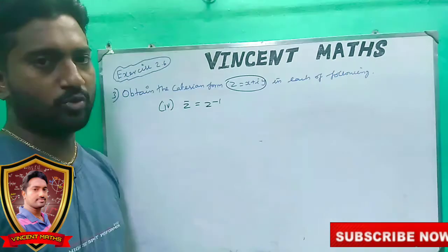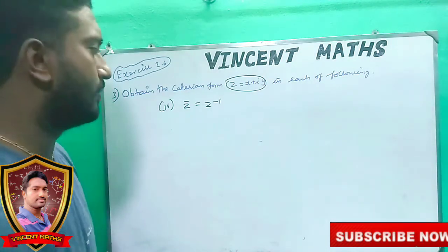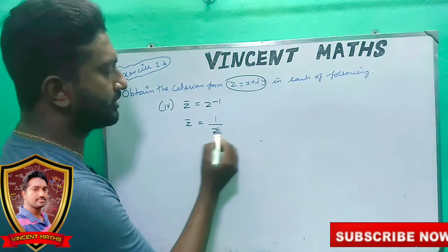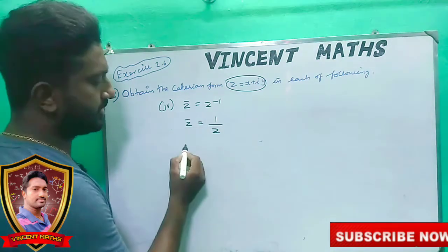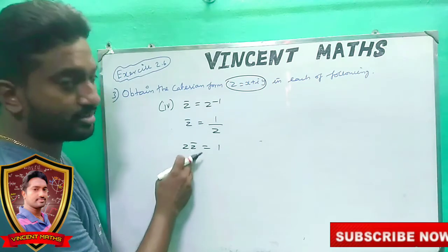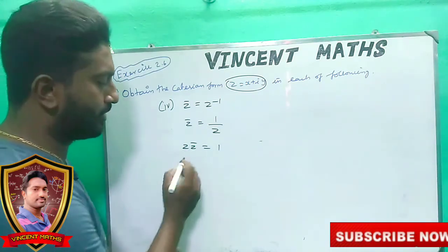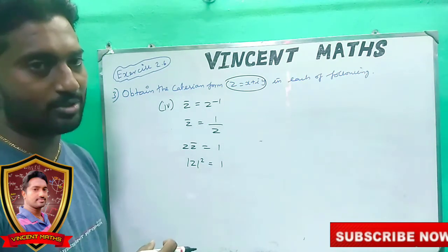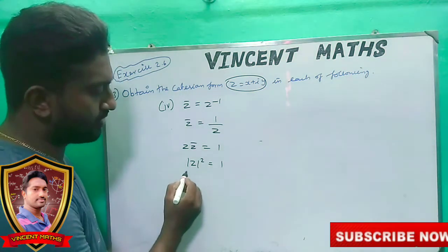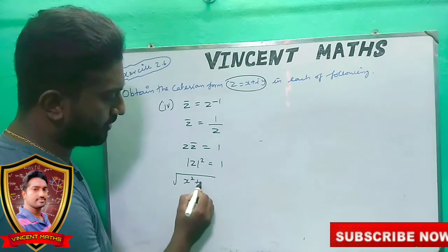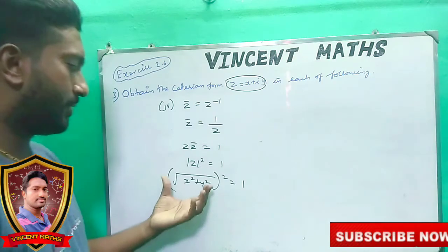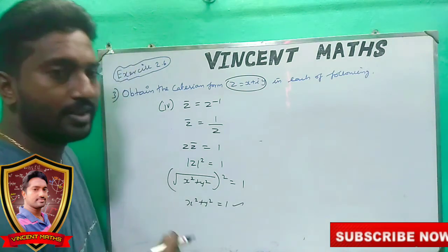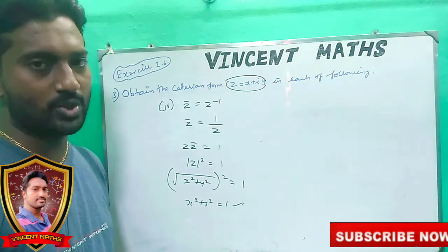This is what we find for the Cartesian form. For z-bar equal to 1 over z, that is the inverse — inverse is 1 by z. What we find is the value of 1 by z, which gives x squared plus y squared equal to 1. This is the main Cartesian result. Okay friends, we'll see you next time. That's the end of the video, I'm Vincent, thank you.